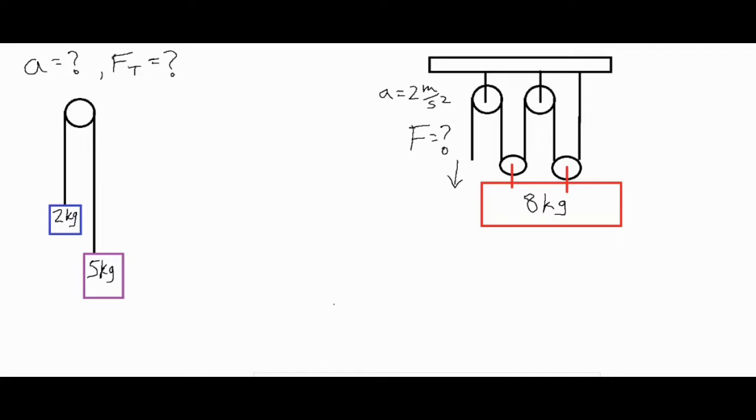Anytime you have a system of a couple things, typically you're going to take a look at both things as one large system. If we put these two as one big large system, we're going to take a look at all the forces that are external in the system, so not anything that's within this dotted line. We have the force of gravity of the five kilogram mass and we have the force of gravity for the two kilogram mass.